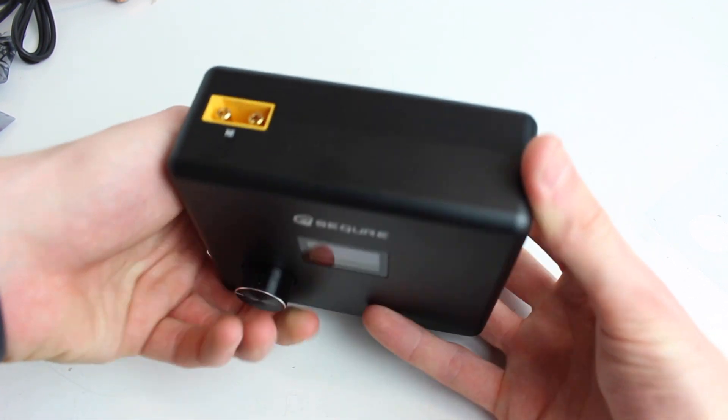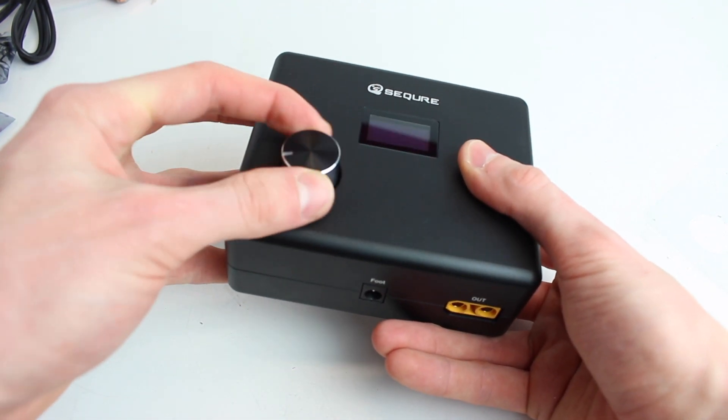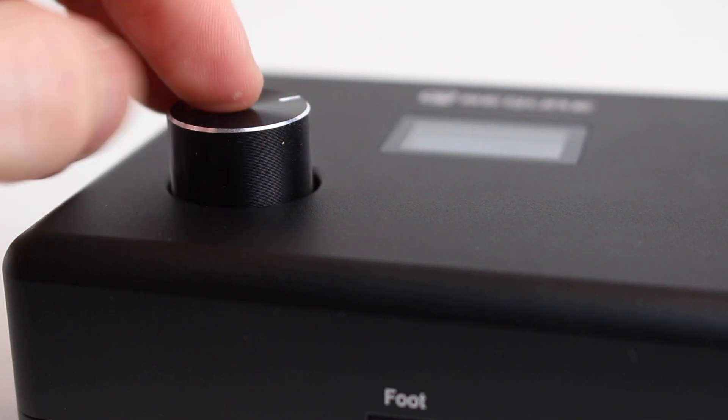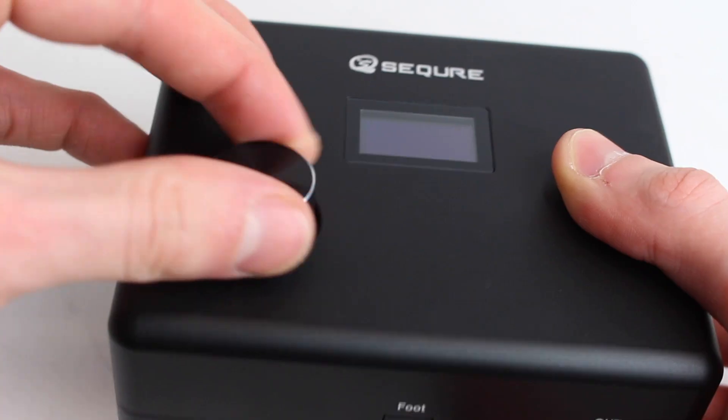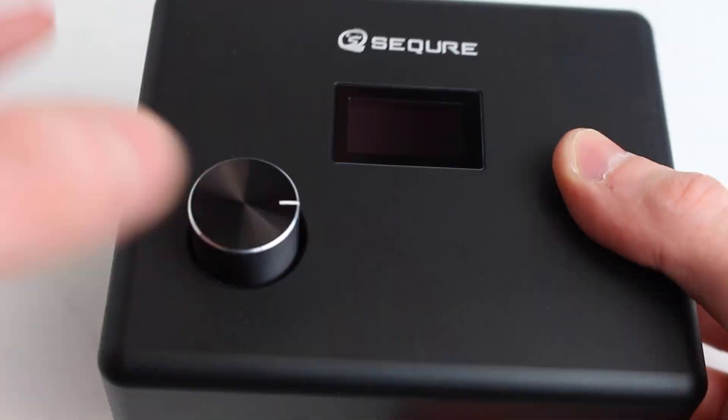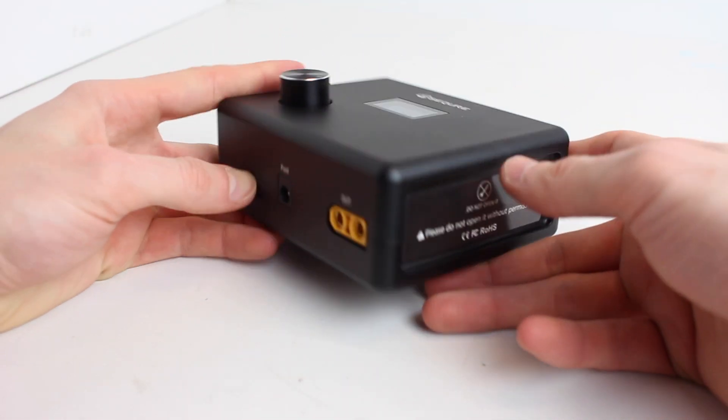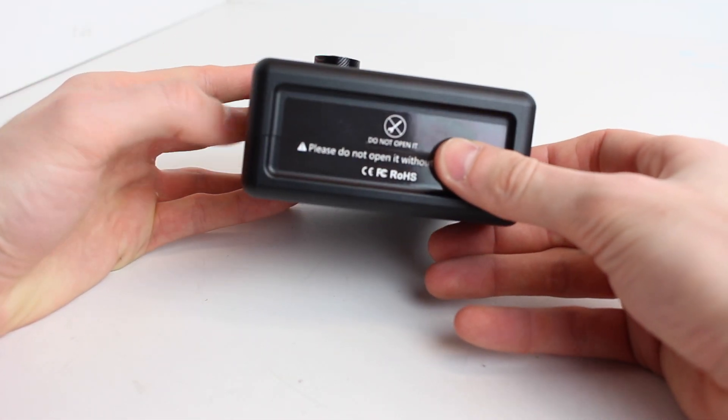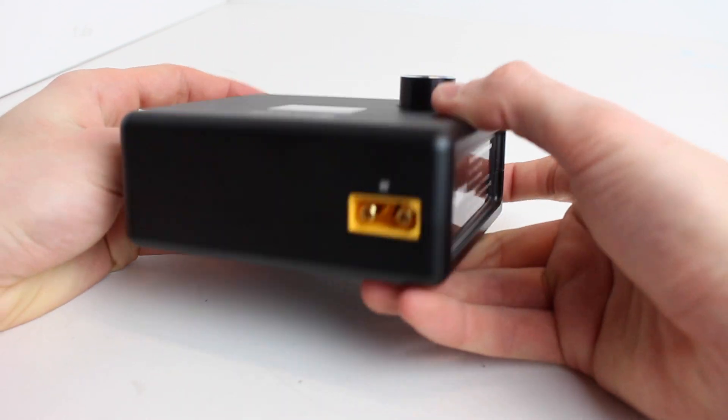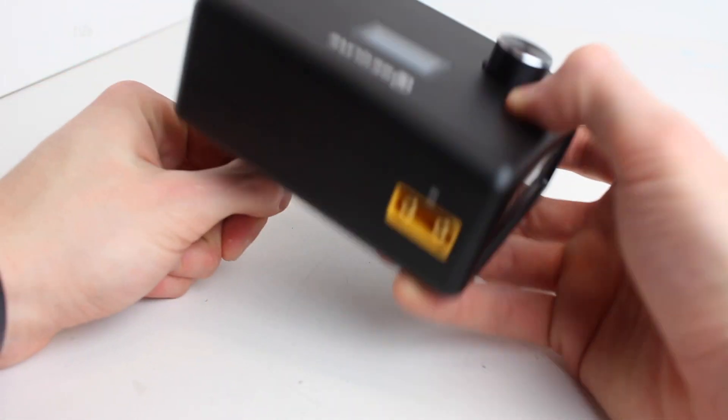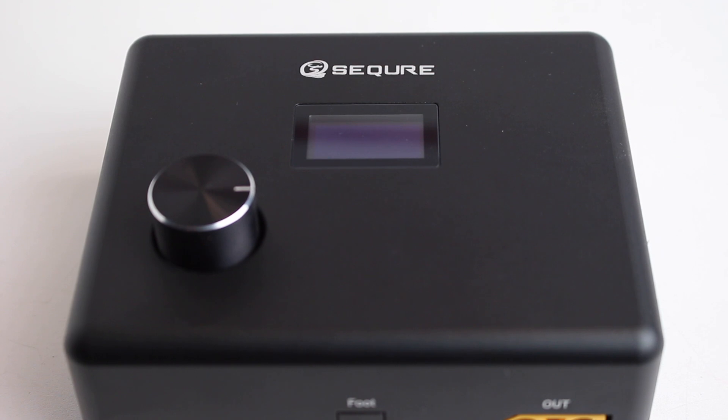For now we're going to be talking about what comes inside the box. The biggest thing inside the box is the actual spot welder itself. This is a pretty compact one as you can see. There's a knob right here and an LCD display to let you know your current settings of welding. Personally I think that it feels super dense and super high quality, and considering that it was at this price point I didn't have high expectations for the quality.